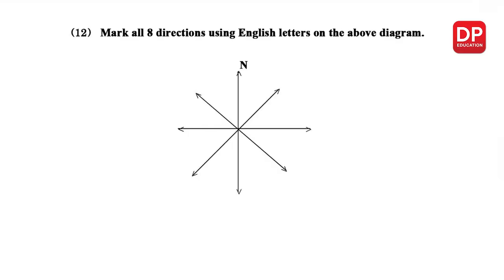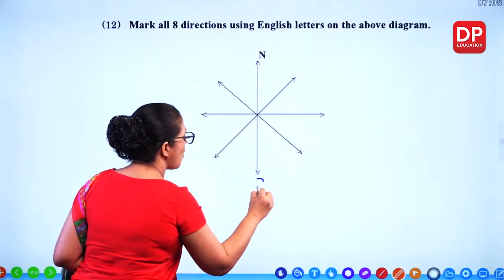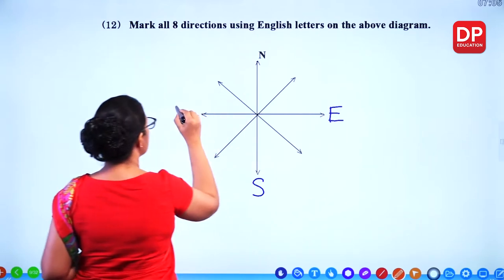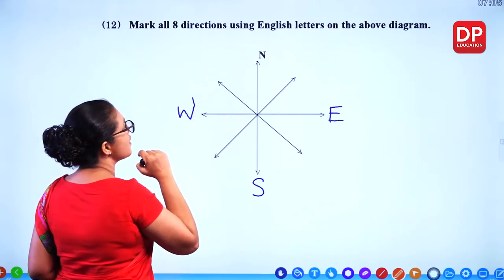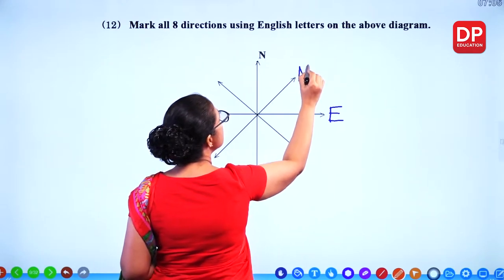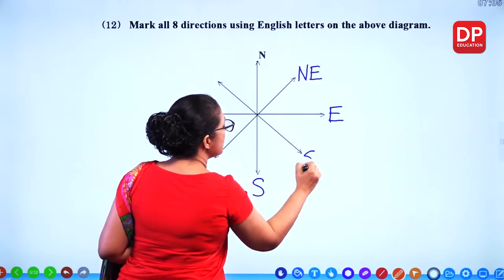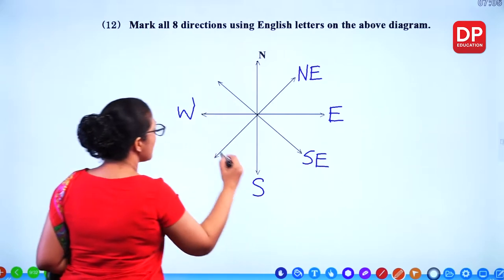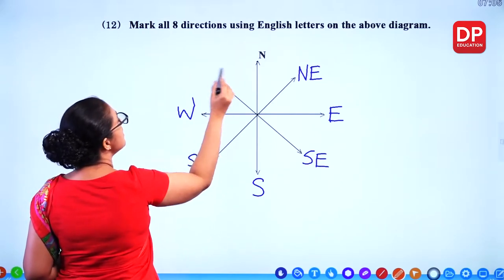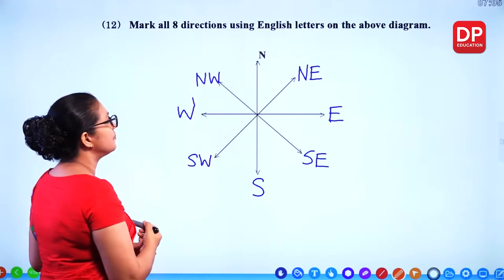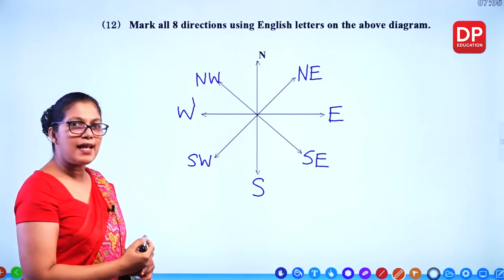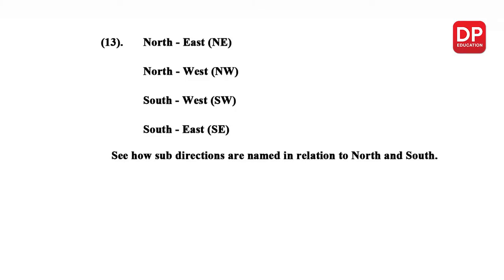Mark all eight directions using English letters on the diagram. The main directions are north, south, east, west. Then the sub-directions are north east (NE), south east (SE), south west (SW), and north west (NW). All together there are eight directions. Two directions use north — north east and north west — and two directions use south — south east and south west.